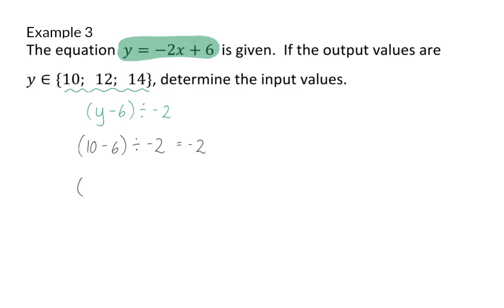Next I'm going to take the second output value of 12 and subtract 6 to get 6, and then divide the 6 by minus 2 to get the next input value of minus 3. Lastly, I'm going to take 14 and subtract 6 to get a value of 8, and then 8 should be divided by minus 2 to get the value of minus 4.